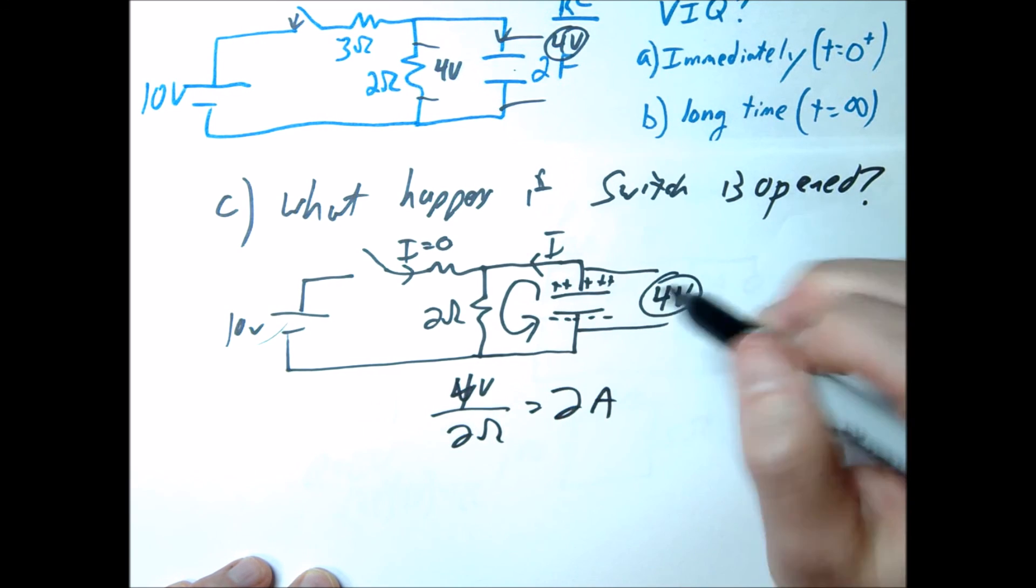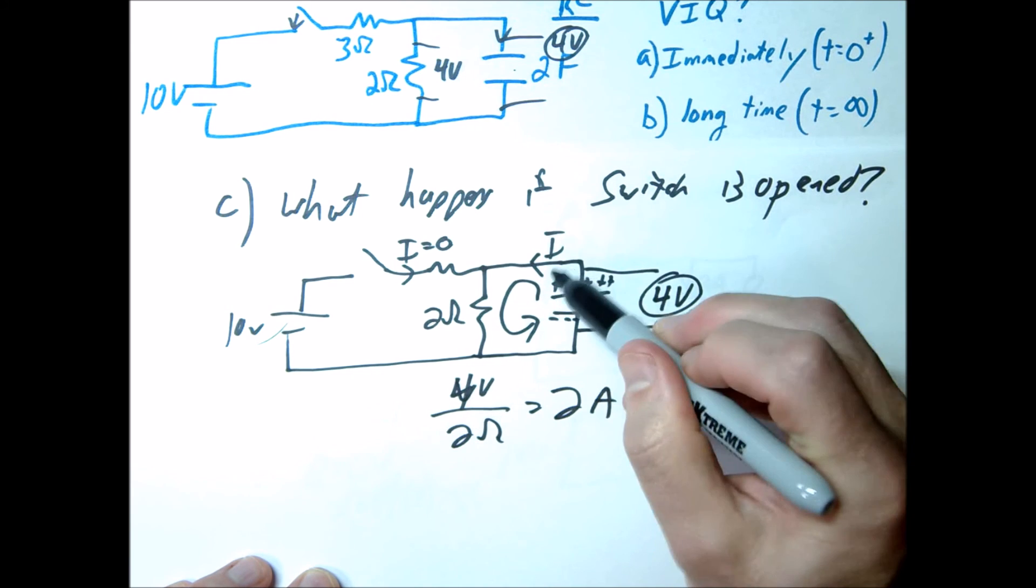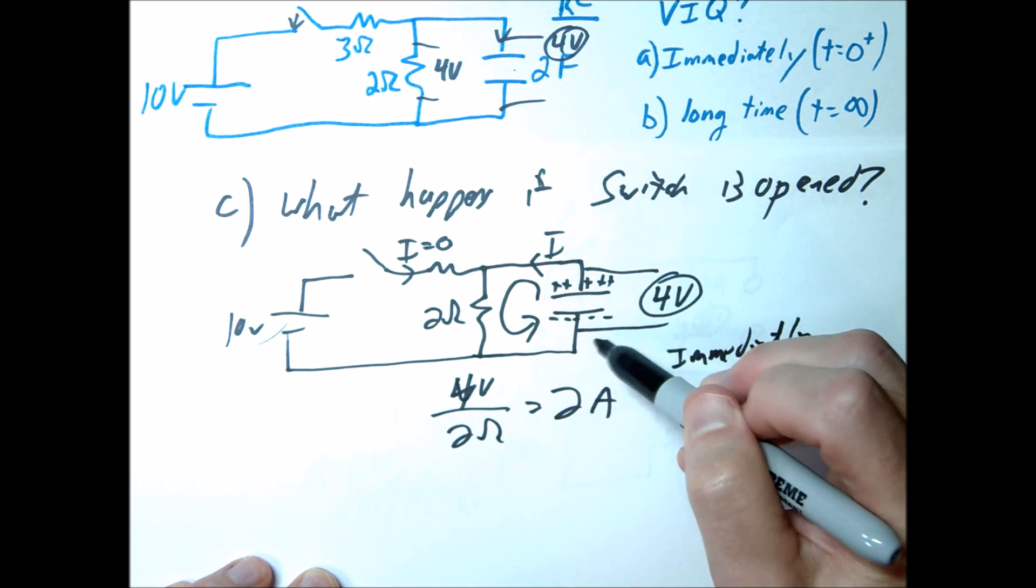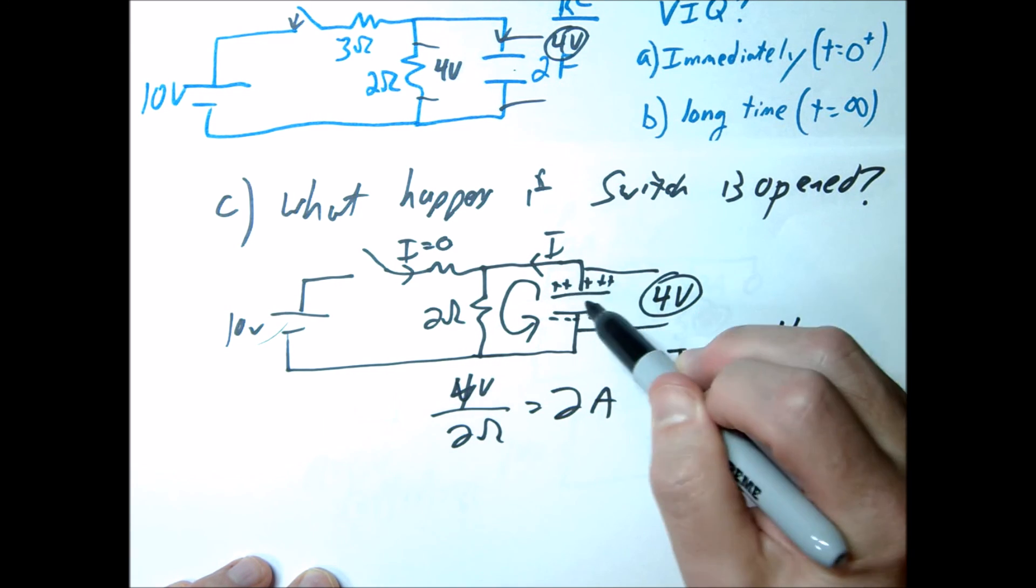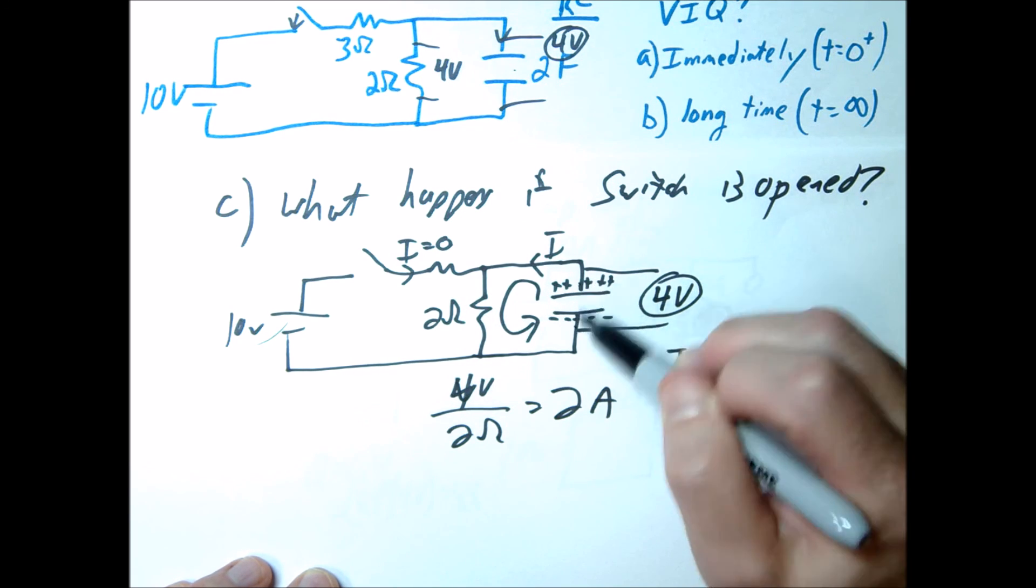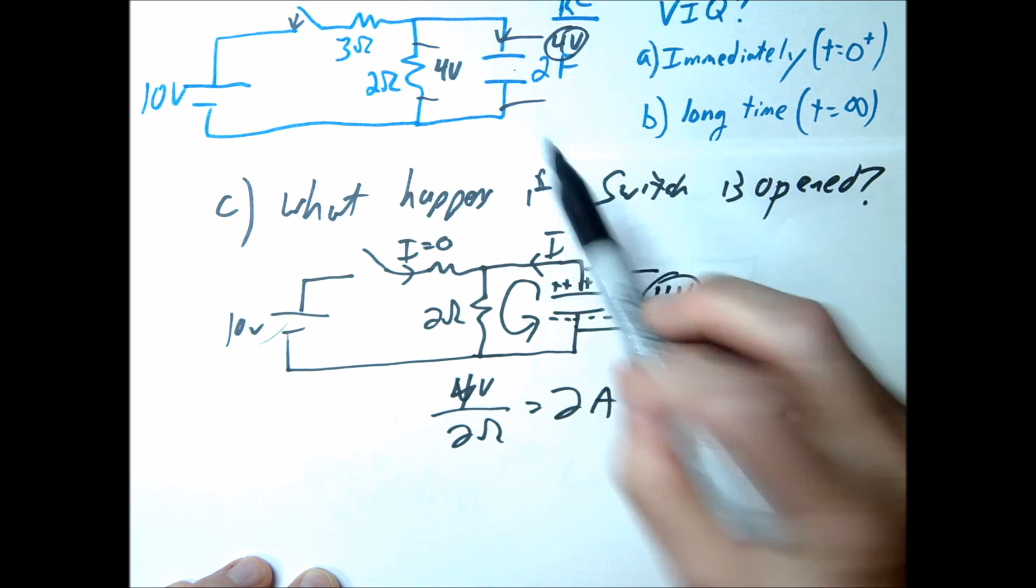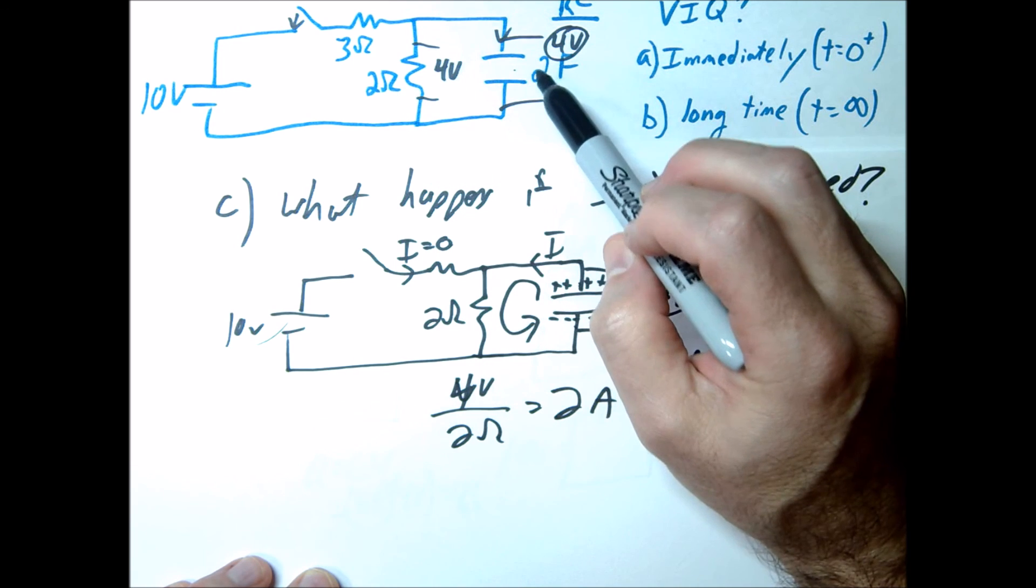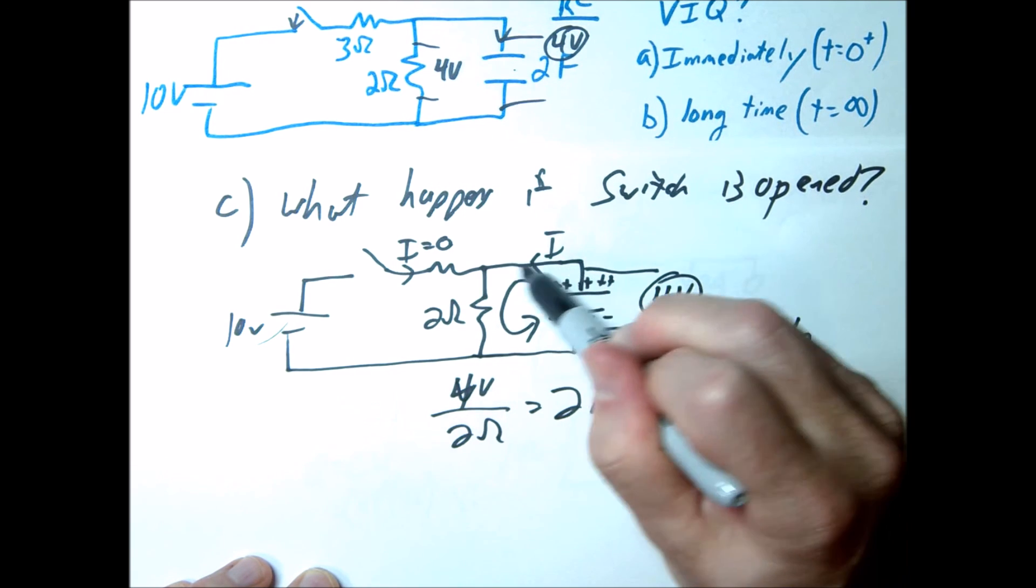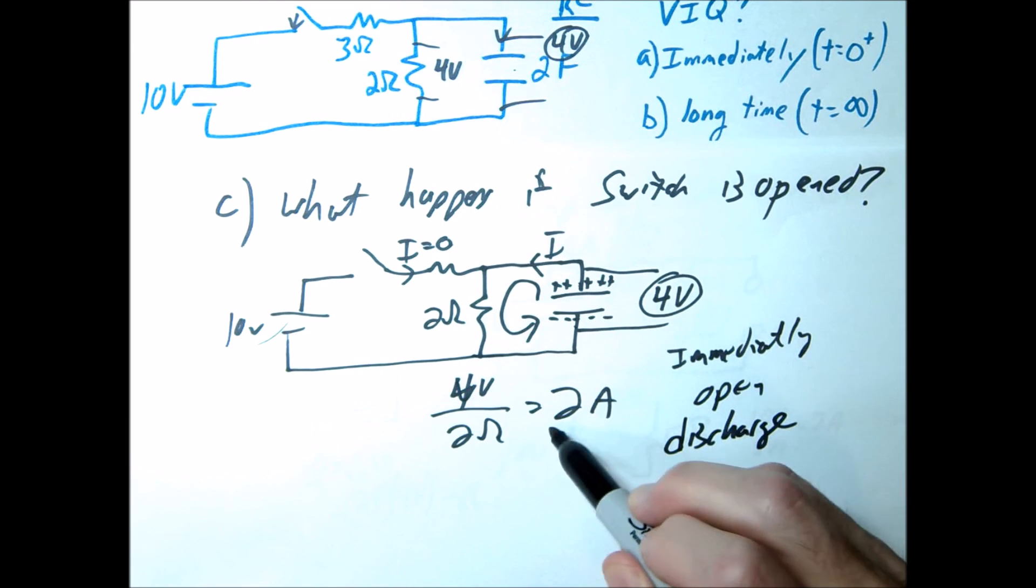So this would be immediately, this would be immediately open the circuit. You're going to get 2 amps flowing this way. Now, over time, this is going to, all these negative charges are going to flow back to the positive, and so it'll reach a neutral state. This is called a discharge that's happening. Before we were charging up this capacitor. In this case, we're going to be discharging the capacitor. And it's going to move through this 2 ohm resistor here, 2 amps initially, and it's going to decrease to 0.